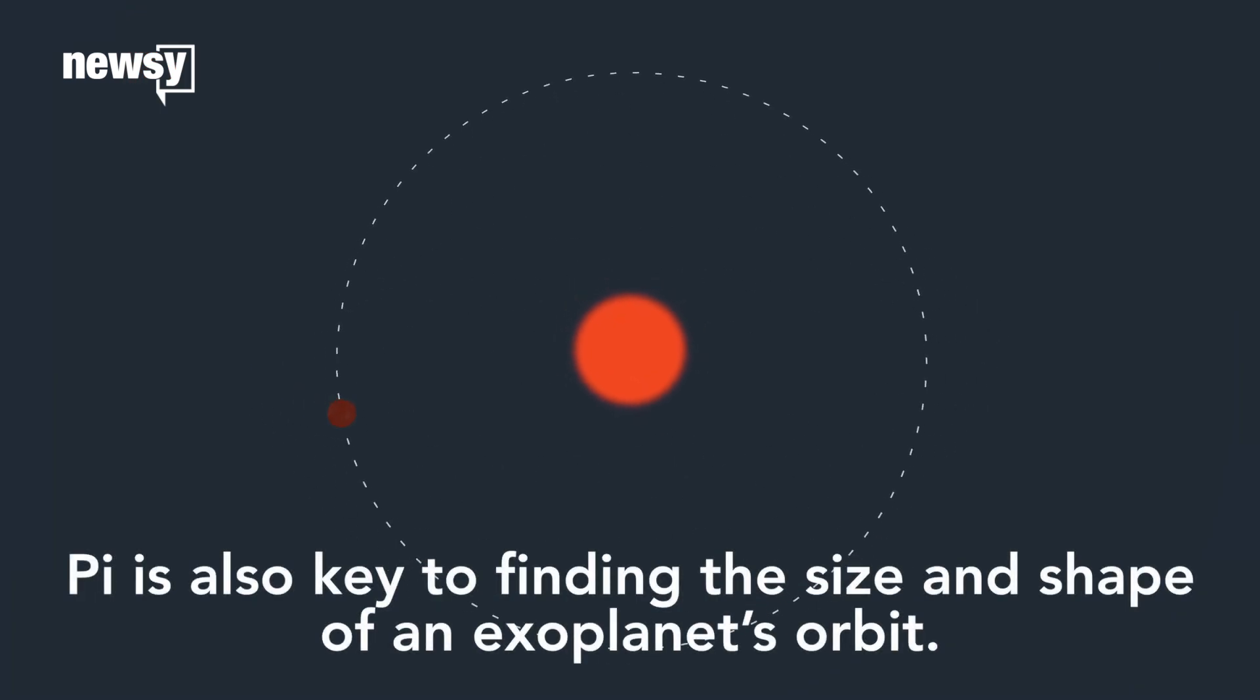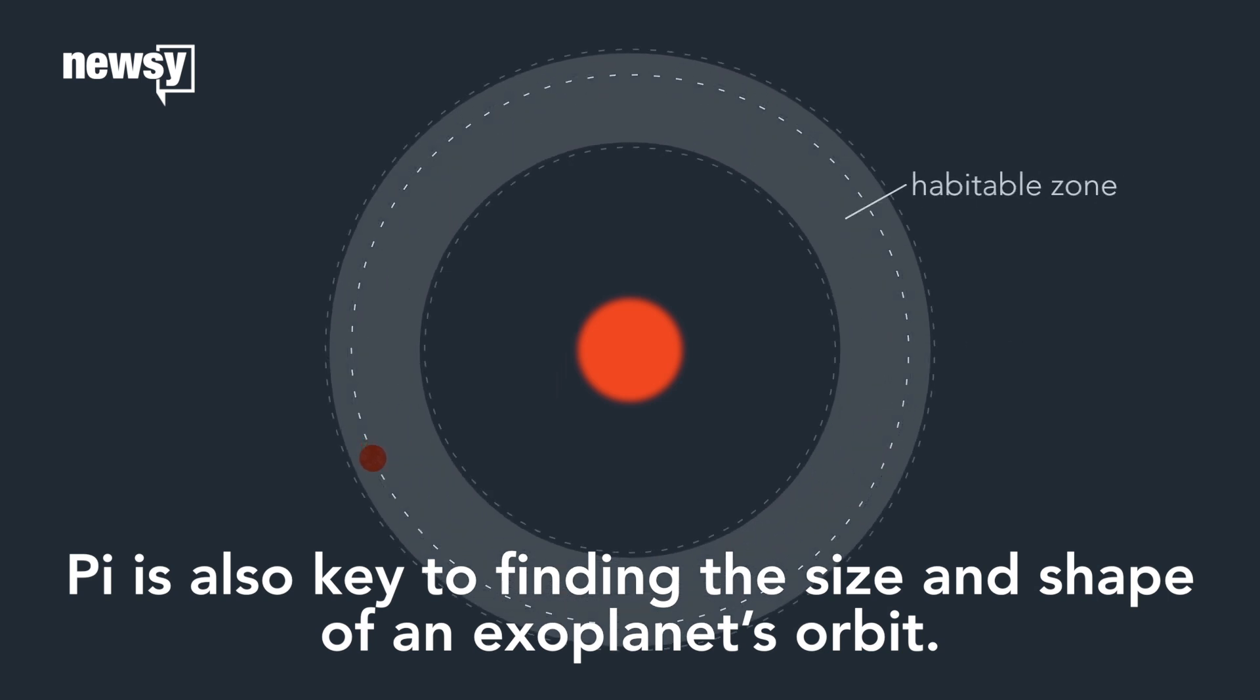Pi is also key in modeling the exact size and shape of an exoplanet's orbit. That can tell scientists if it's in the habitable zone of its host star — the area where life might be possible.